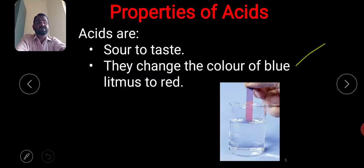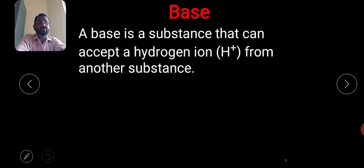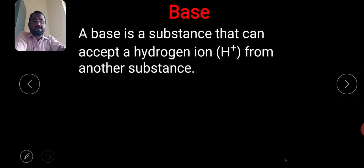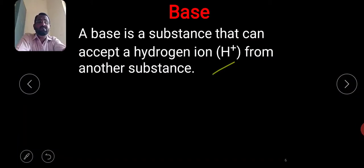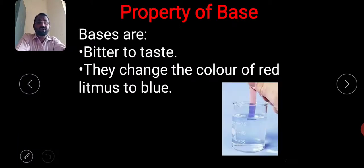Next, a base is a substance that can accept a hydrogen ion from another substance. Substances that can accept hydrogen ions from other substances are all called bases. These are the two properties of acids: sour to taste and changing blue litmus to red.